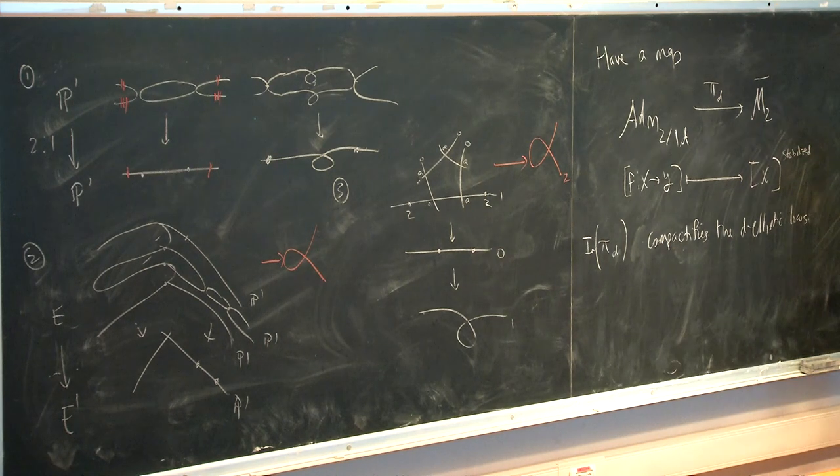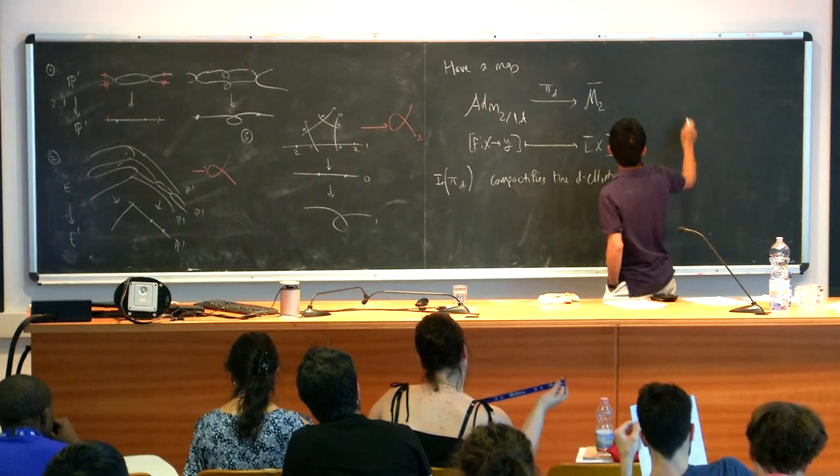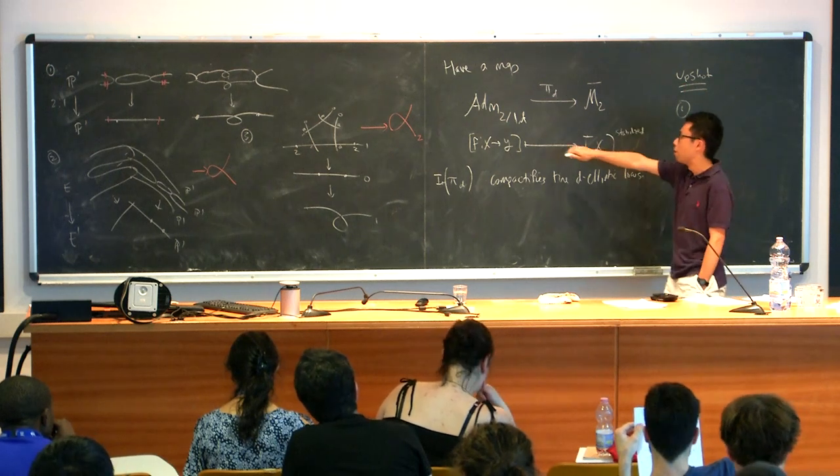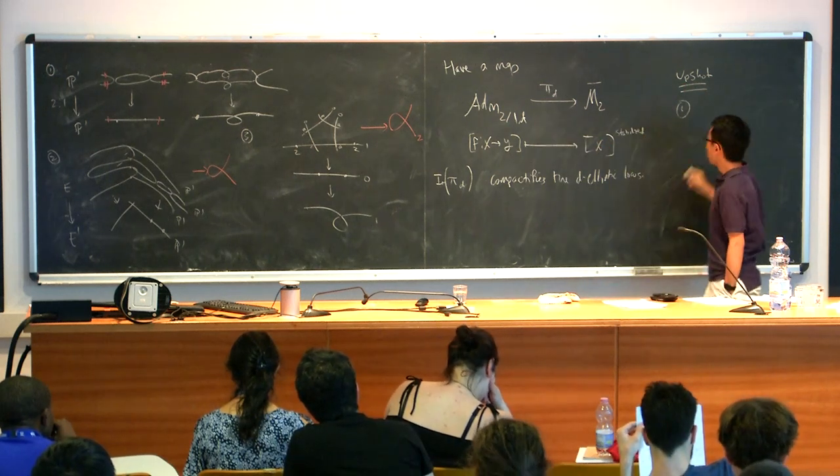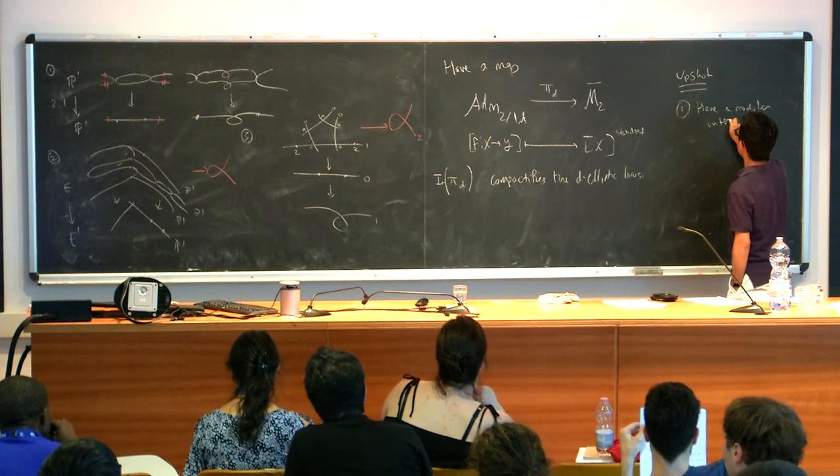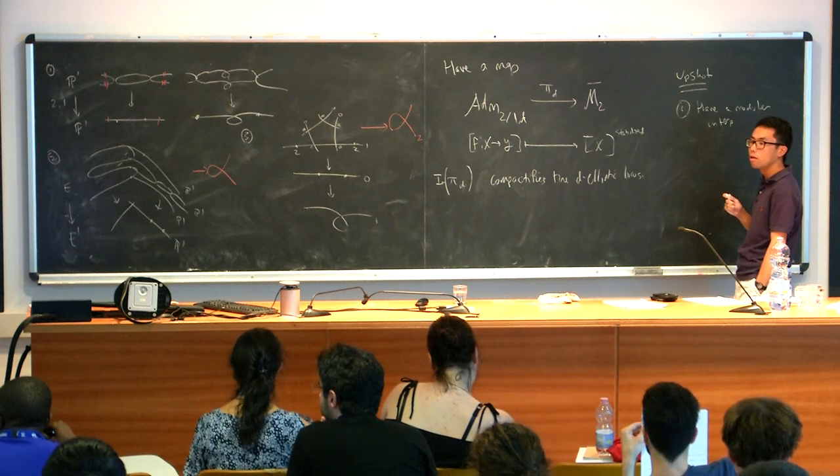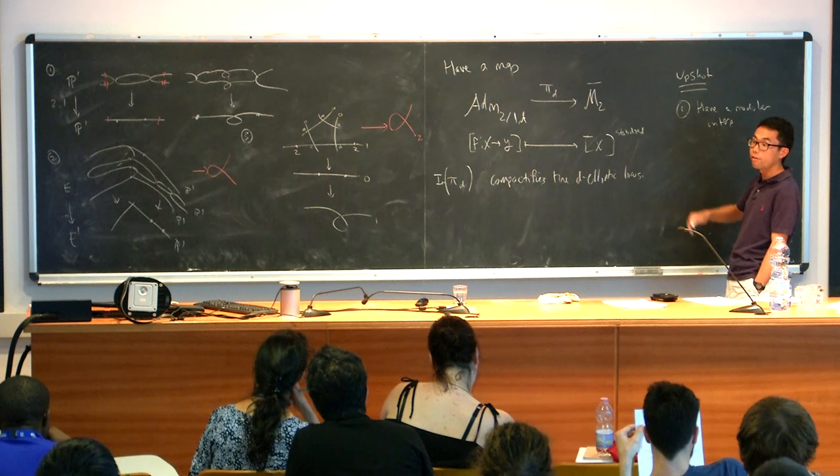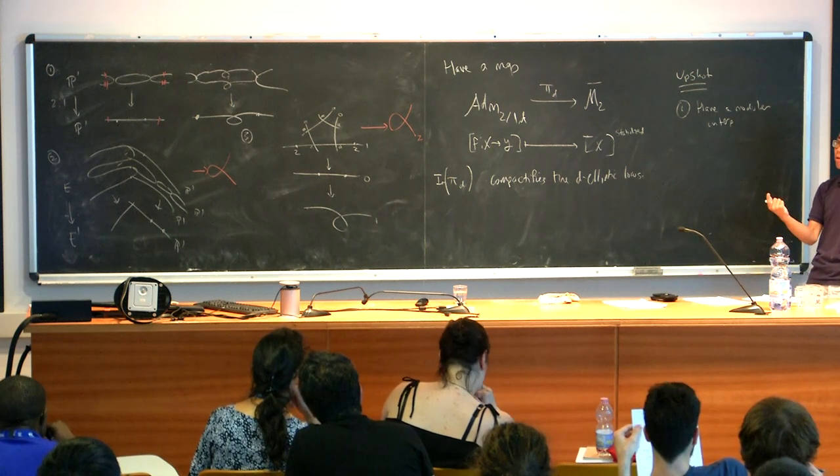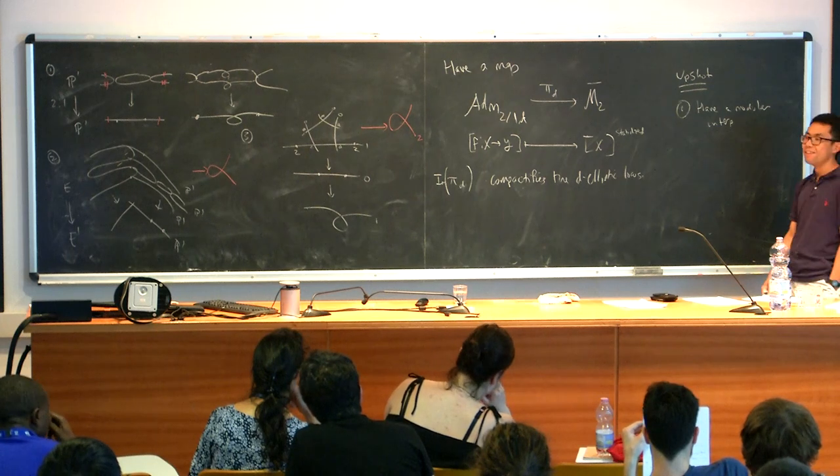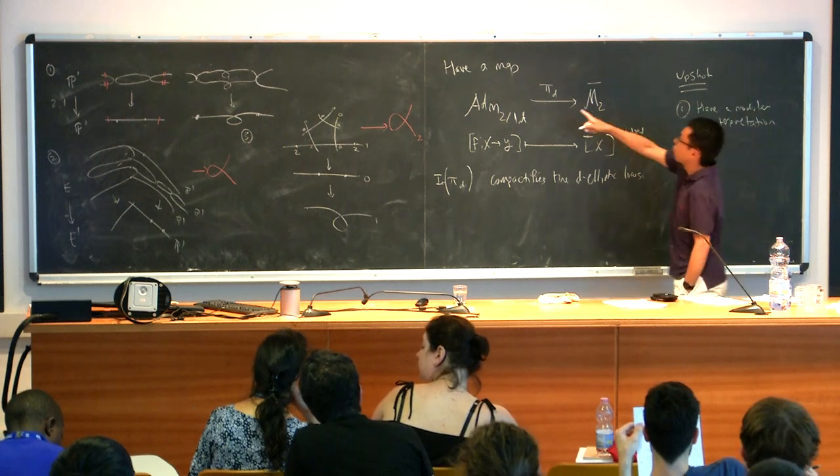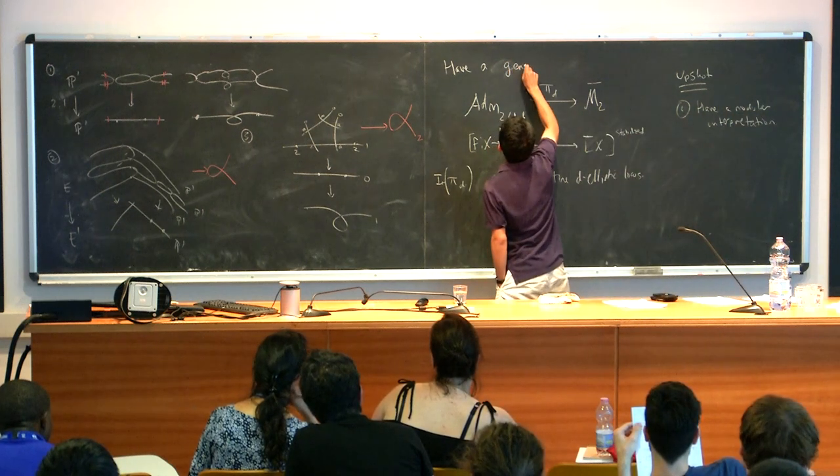Okay. And so why is this better than the formulation I stated at the beginning? So there are two reasons. So upshot. So one reason is that we actually have a modular interpretation of this now. So have a modular interpretation of the image. It's a divisor. Yeah. Yeah. It's a divisor. So we actually have a modular interpretation. Maybe, I also should have said, let me say generically finite.